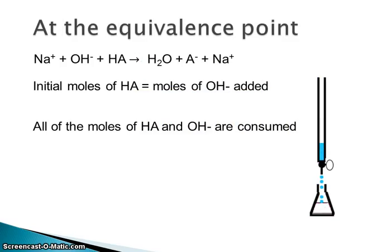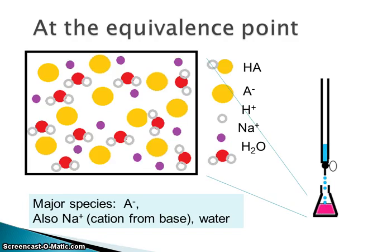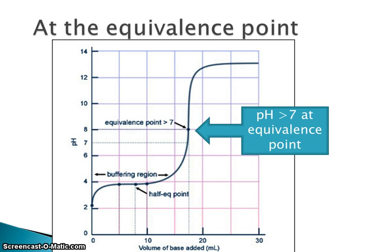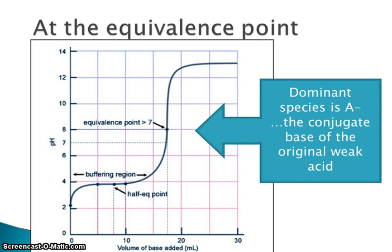At the equivalence point, the initial moles of HA equal the moles of hydroxide added — typically a one-to-one ratio — so there's no HA left and no OH⁻ left. The dominant species at the equivalence point is the conjugate base A⁻, along with water and the sodium ions from the base. The pH will be greater than 7 at the equivalence point because of the presence of this conjugate base, which hydrolyzes with water to make a basic solution.